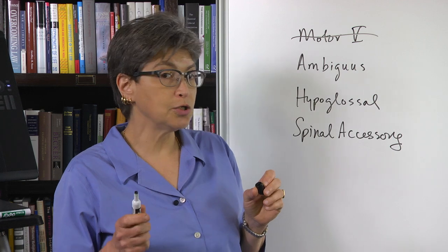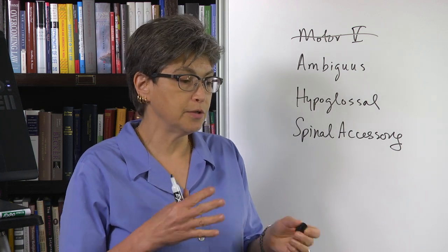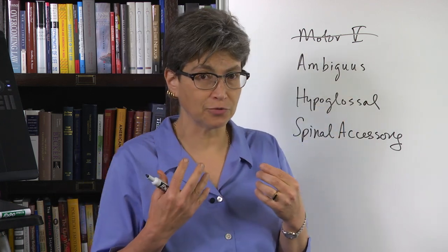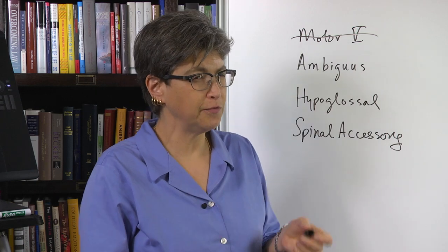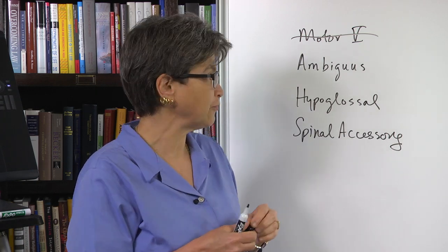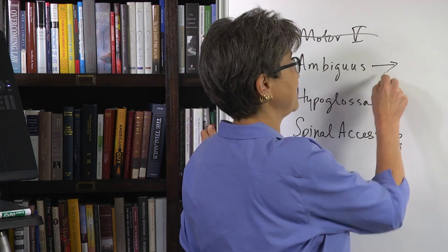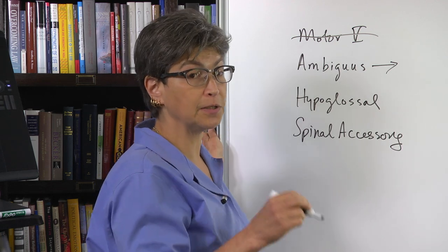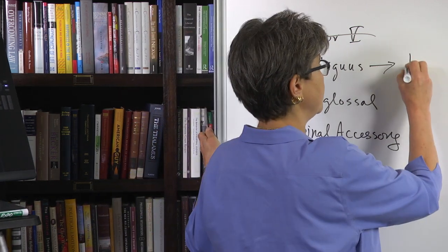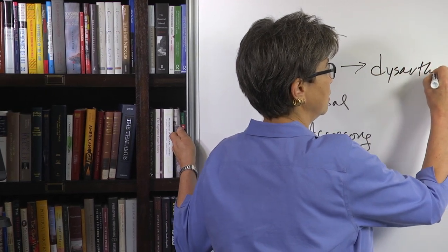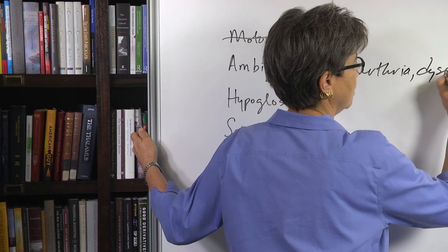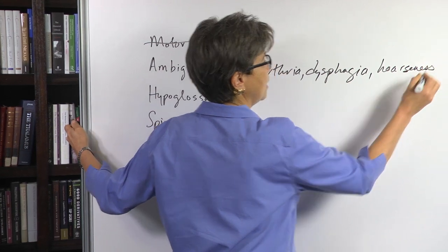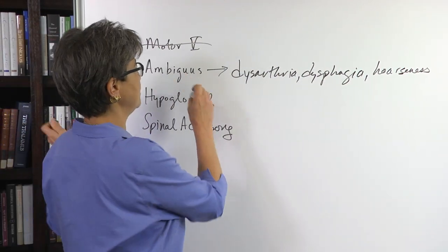Nucleus ambiguous also has bilateral structure and the innervation might even be bilateral or possibly with a preference, but the effect of a lesion of the corticobulbar tract to ambiguous is typically very obvious and it's going to cause dysarthria, dysphagia, and possibly hoarseness.